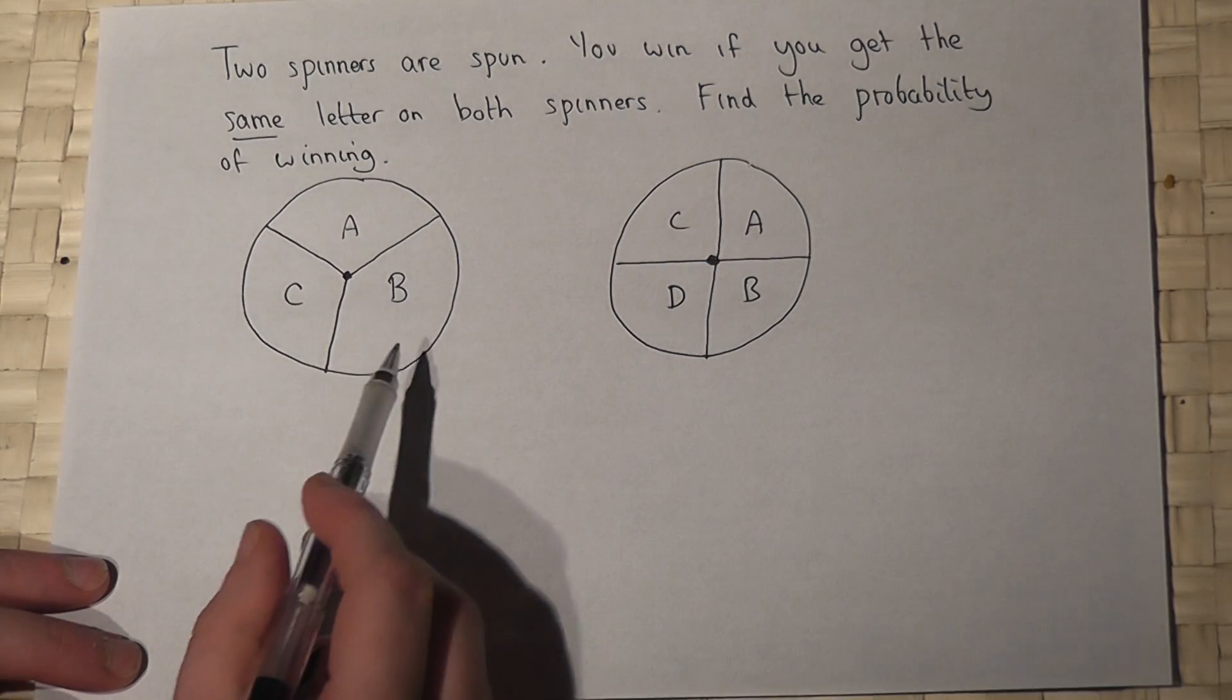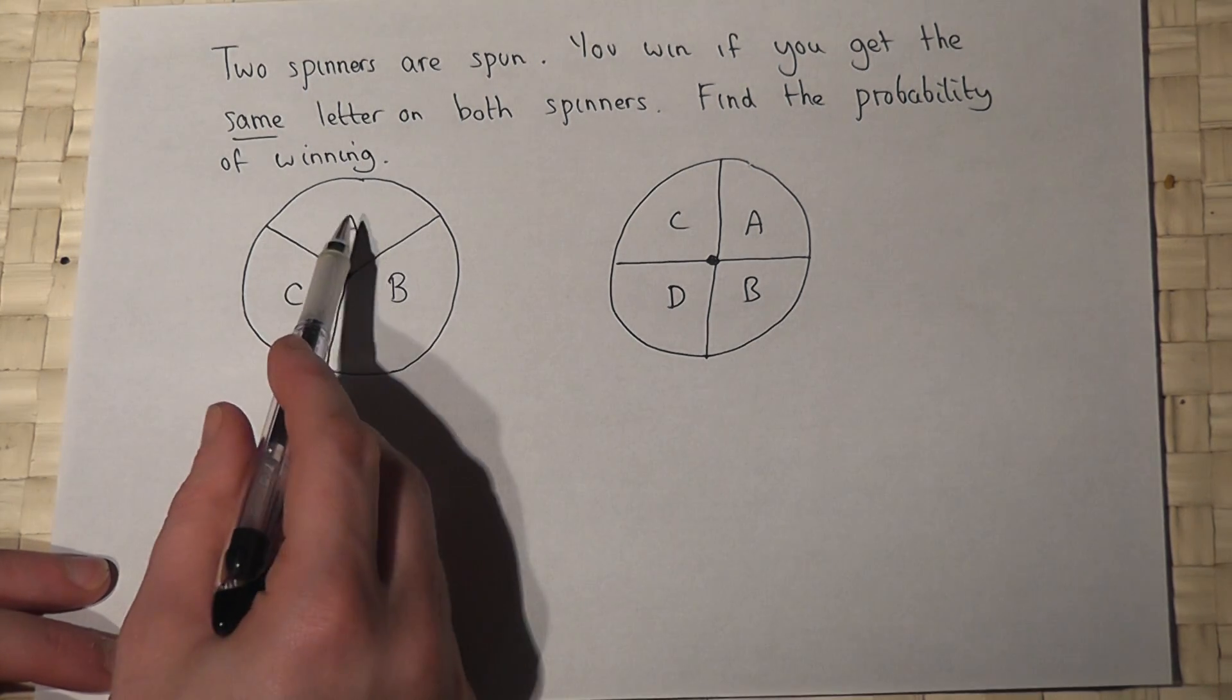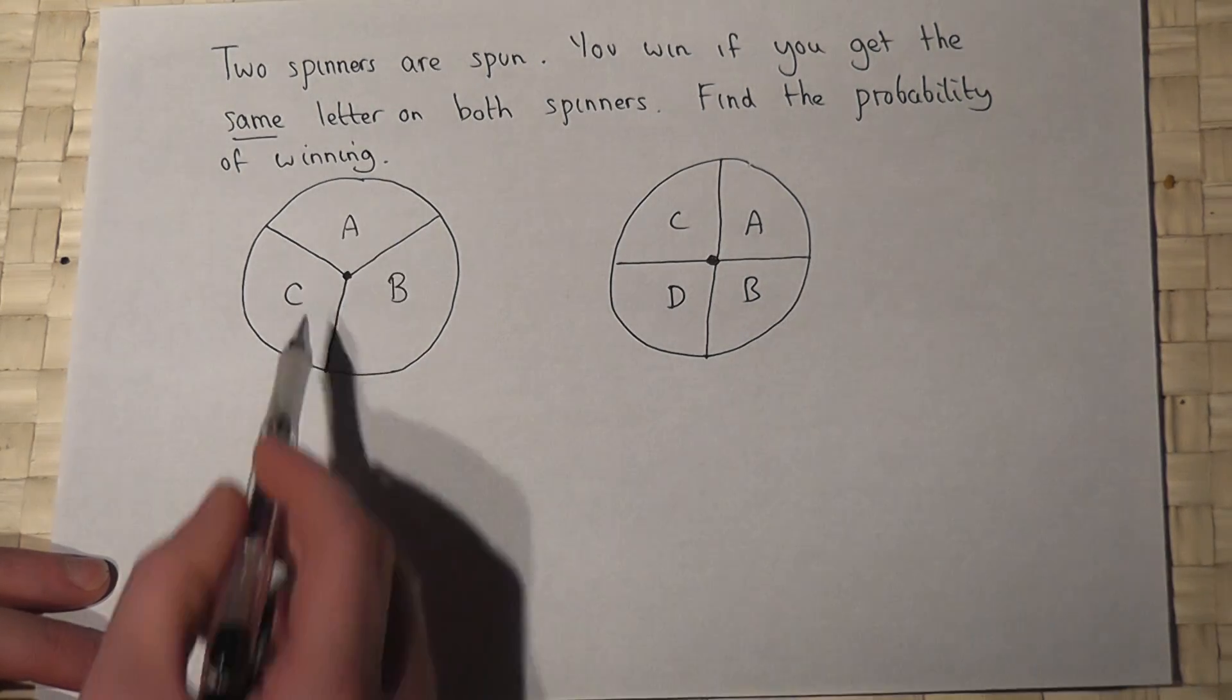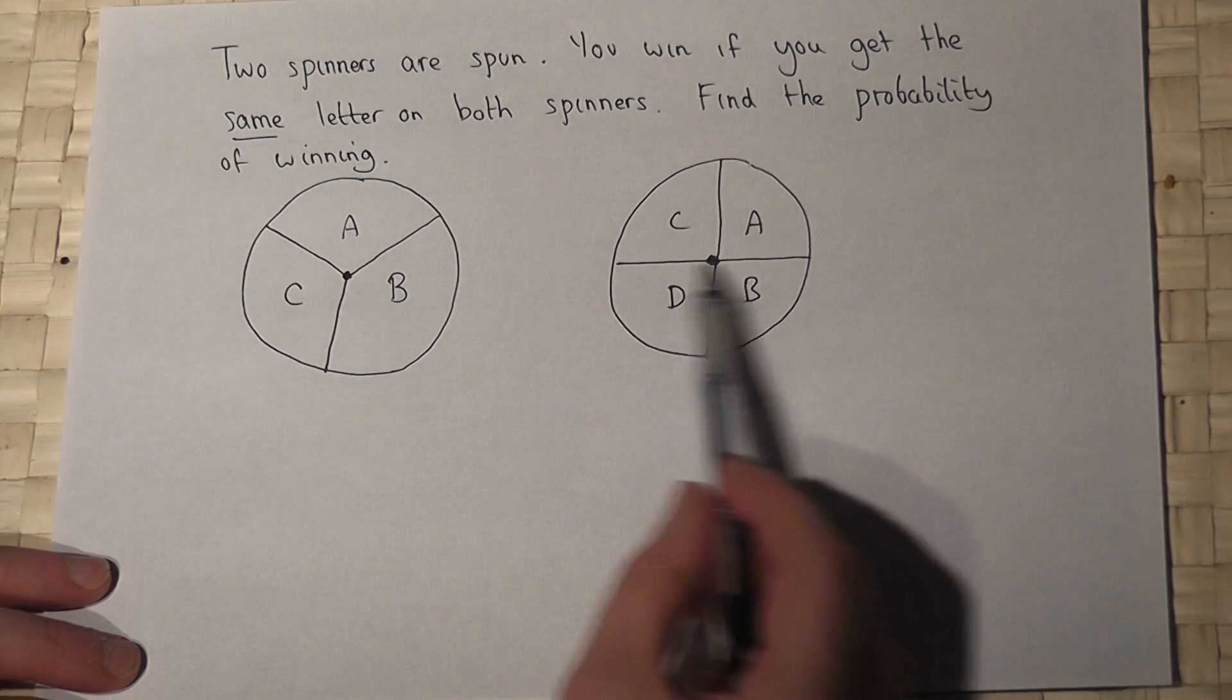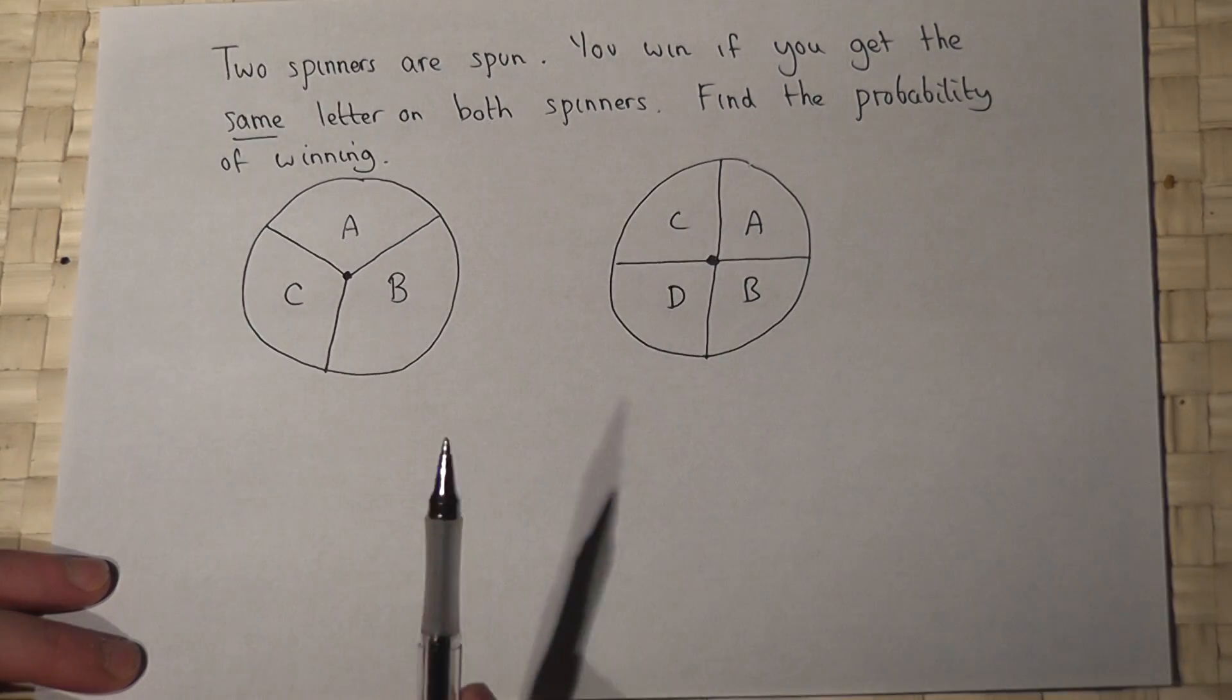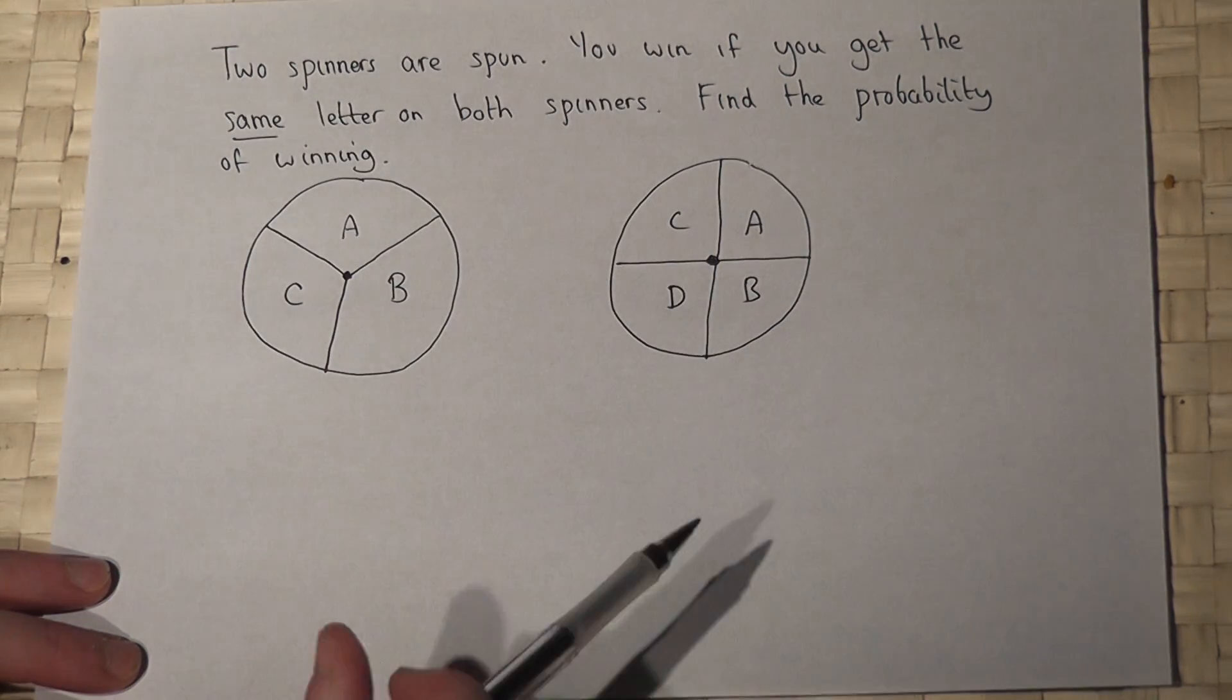In this question we've got two unbiased spinners. One with three sections with A, B, and C, all with an equal size, and another one with A, B, C, D. Again, this is split into exact quarters. And you win when you spin both spinners if you get the same letter. So what's the chance of winning?